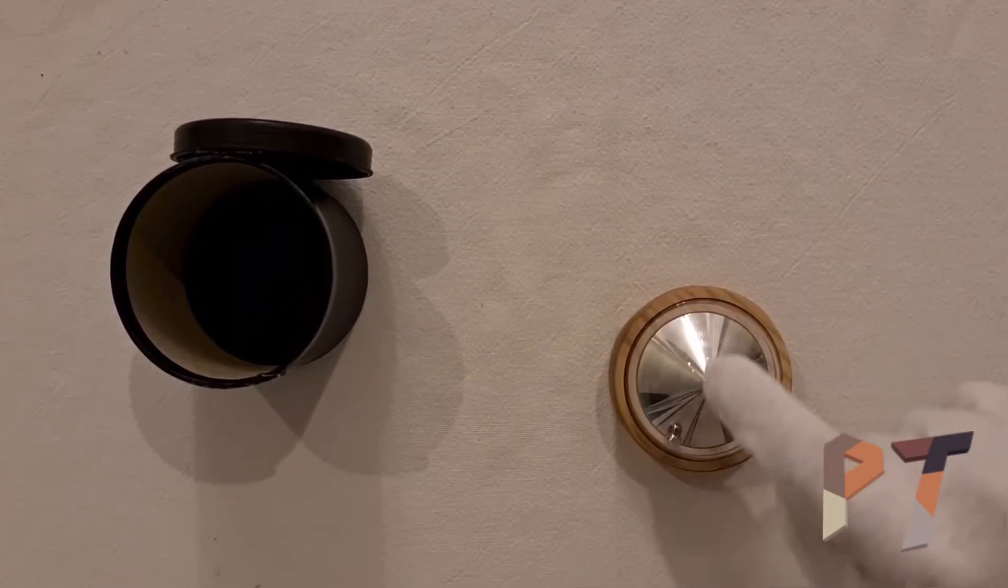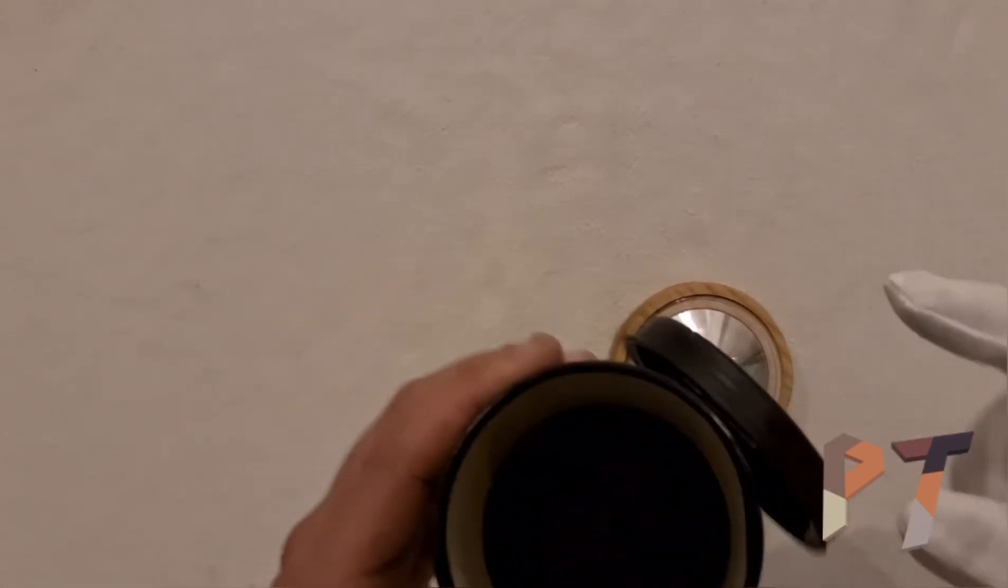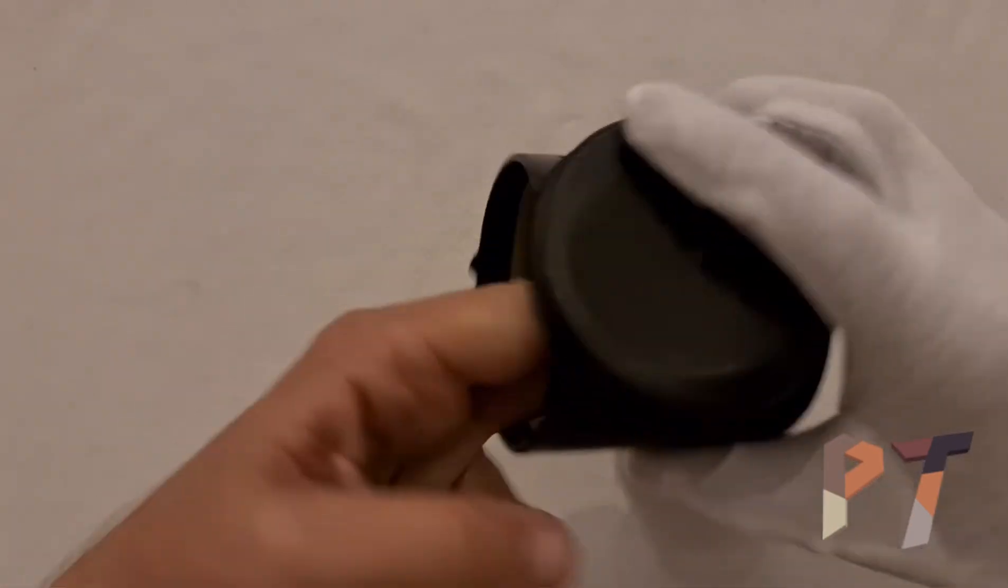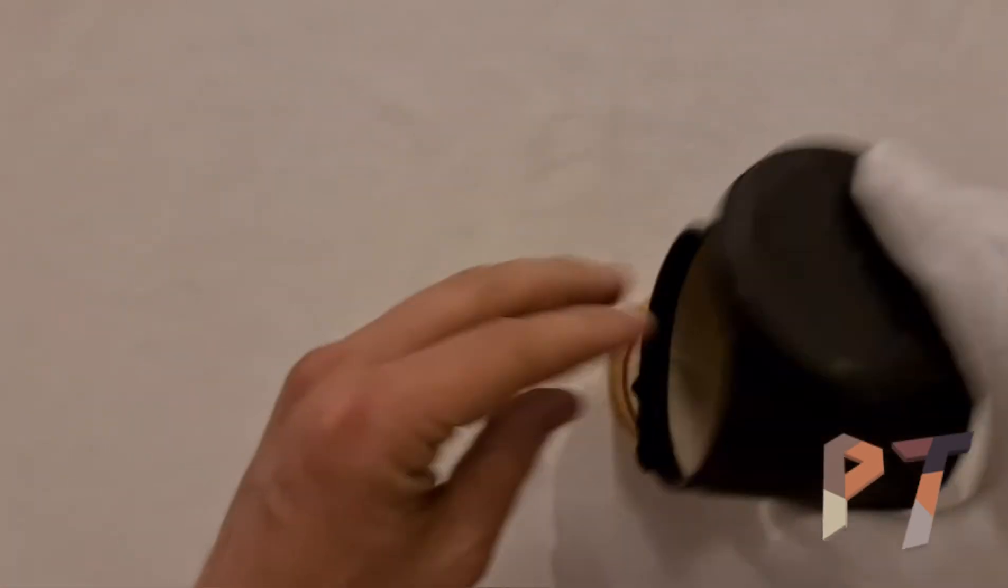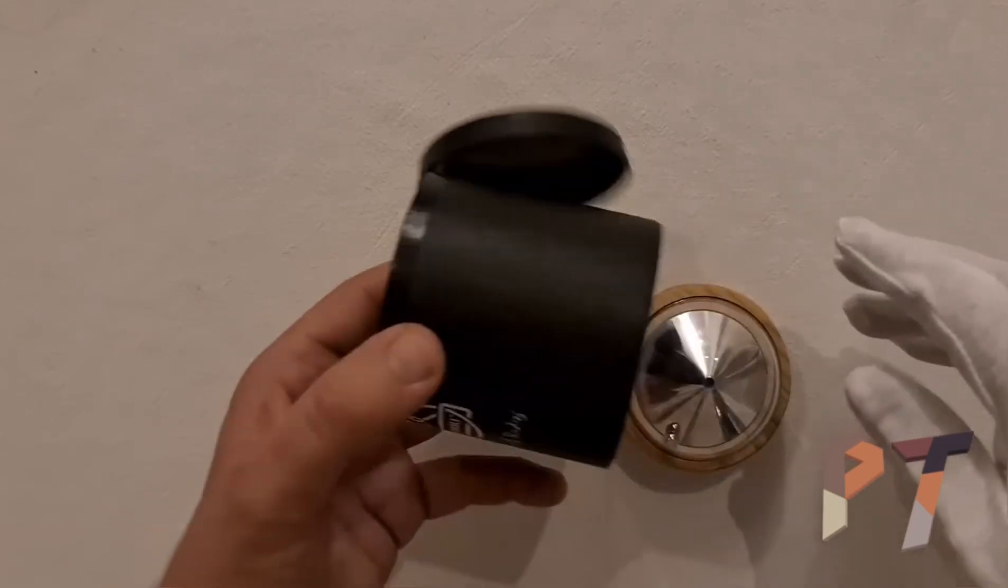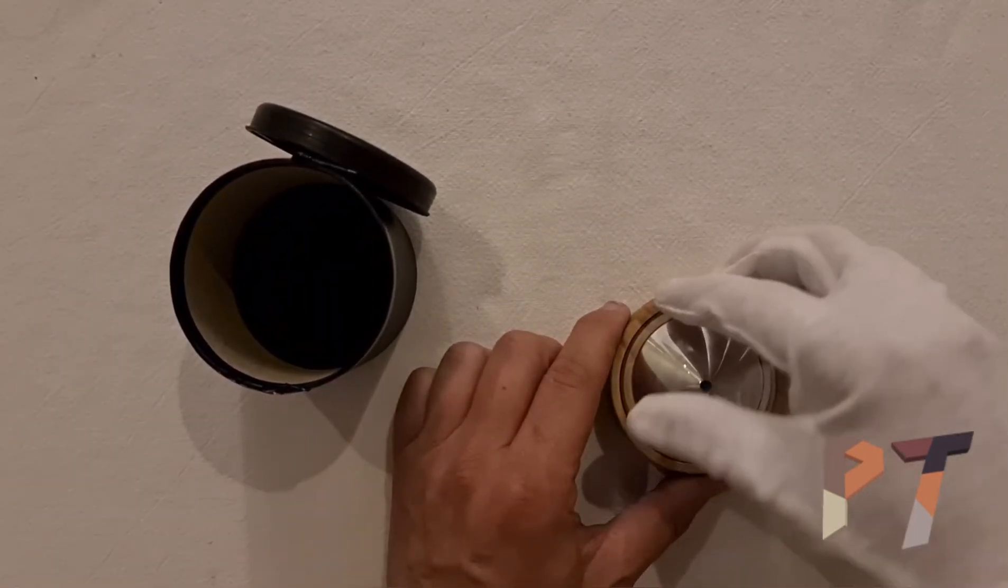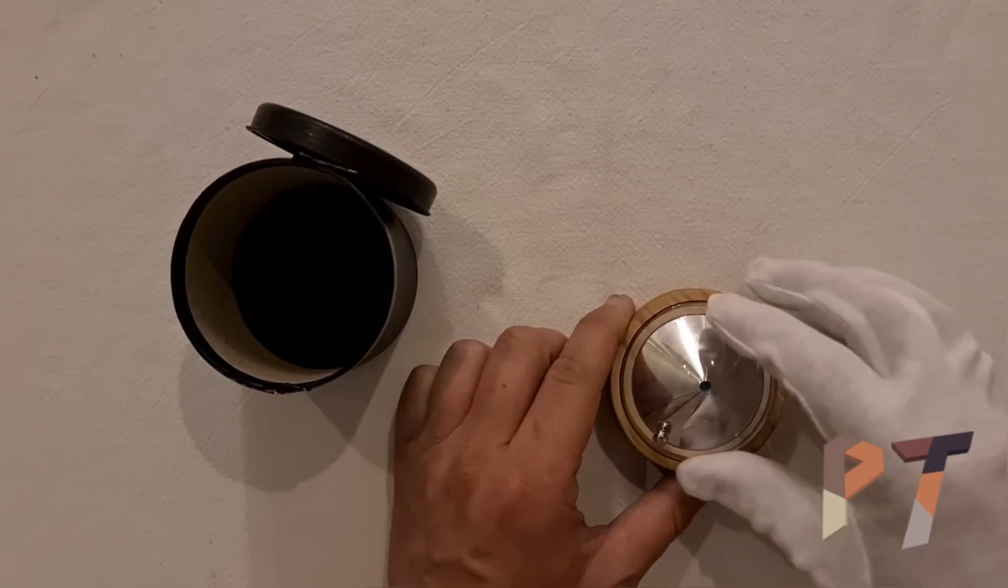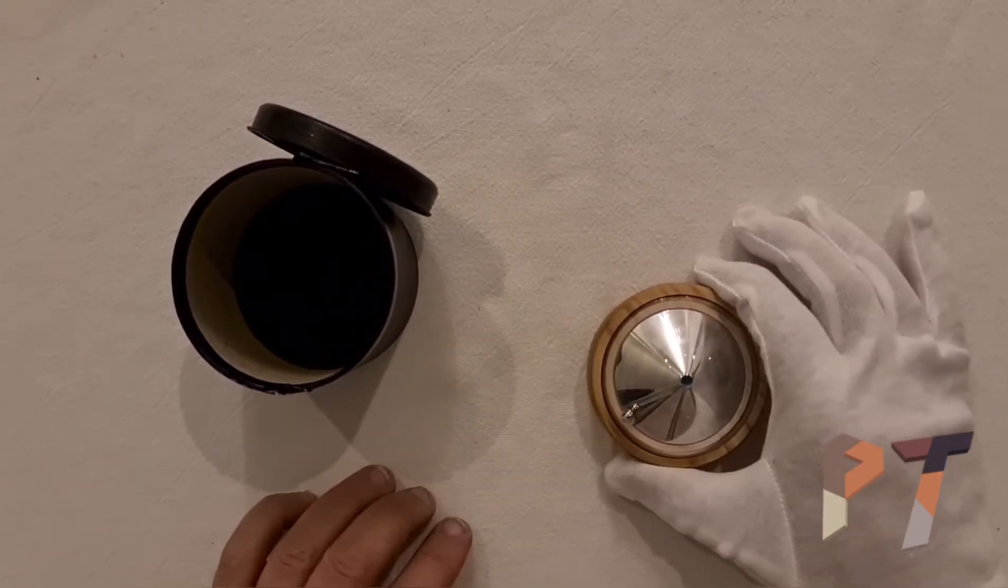I mean, something to bear in mind is this is a metal ball. So if there was a hidden magnet inside this box, which I can't seem to find, you could just use a magnet to kind of move the ball up. I've seen that trick done before.